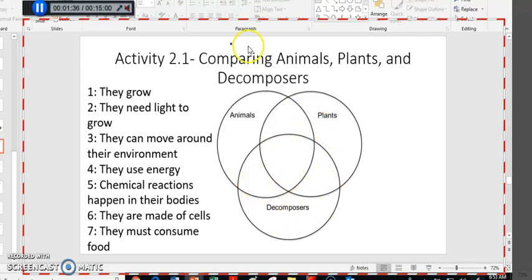So, with that in mind, let's go ahead and figure out where do each of these things belong. Let's start with number one, they grow. So, they grow. Well, who grows? Do animals grow? Do plants grow? Do decomposers such as mushrooms grow? I think we don't have to stretch ourselves very much to say yes, yes, yes, right? They all grow. So, we're going to put number one right here in the middle, applying to all of them. All plants and animals and decomposers grow. They go from little to large, so they grow.